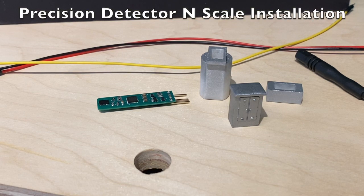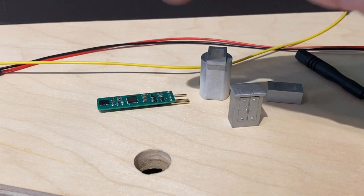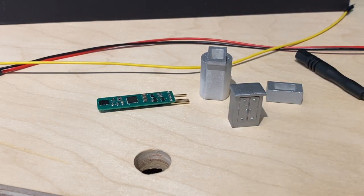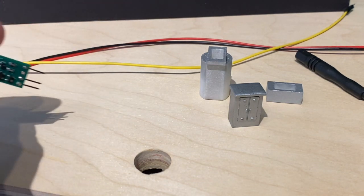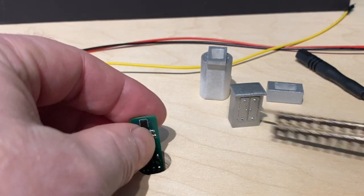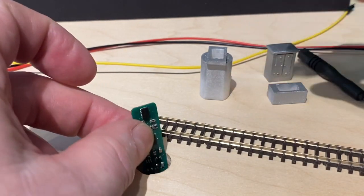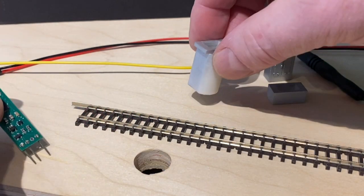Hello everyone, this is Jim Lewis from Model Train Technology. Today we're going to install the N-scale precision detector into the layout. This is a different setup than the HO and other versions where the detector is completely above the layout. The reason for that is the sensor has to be low enough for the track to detect it, so we built this special setup.